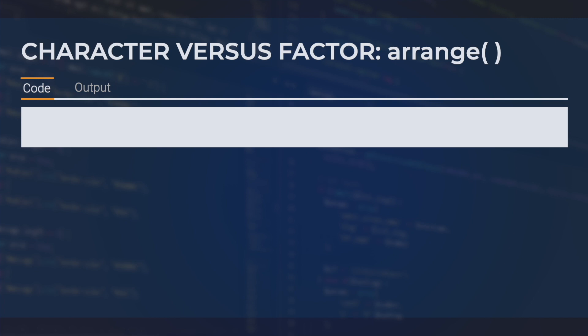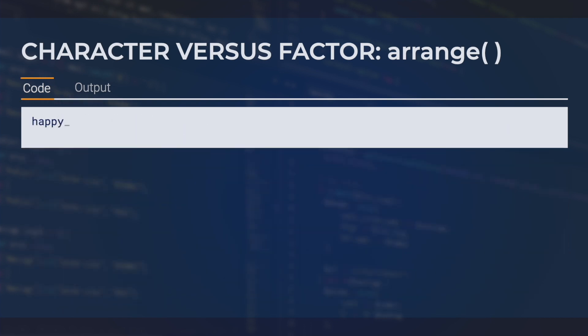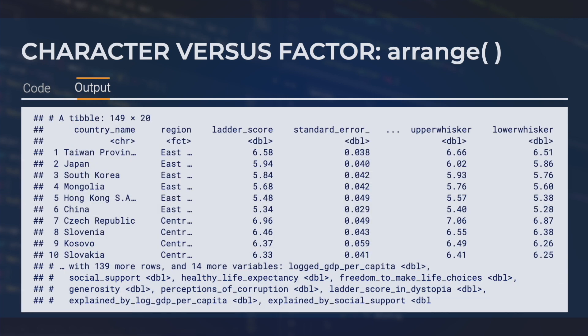Let's now take a look at one of the consequences of this releveling. Let's see how the arrange function affects a character variable compared to a factor. When we apply it to a character variable, we see that this has the effect of arranging the variable in alphabetical order. When we apply it to a factor, we see that region has now been arranged in order of its factor levels. This is an example of how, even though they look very similar, character variables and factors behave differently.